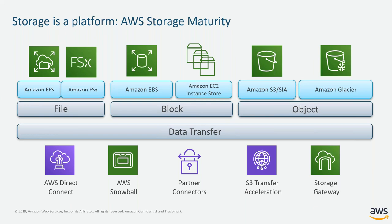In addition to the storage services themselves, AWS also offers a wide variety of data transfer options to help customers get their data to AWS more efficiently. These offerings include AWS Direct Connect, which gives customers a dedicated connection from their facilities to an AWS region, and AWS Snowball, which gives customers a ruggedized storage device that can be loaded with data at their data center and then sent up to AWS.